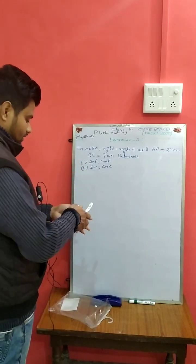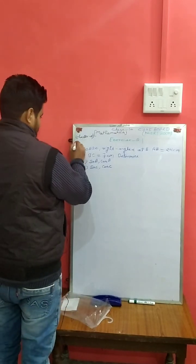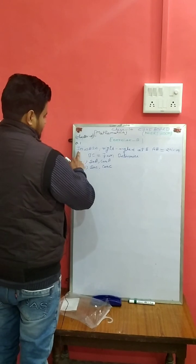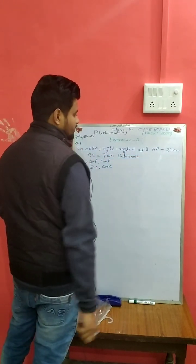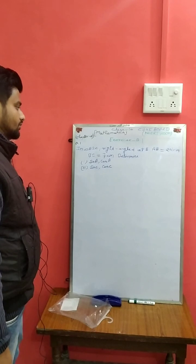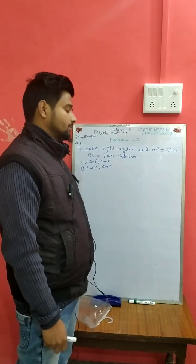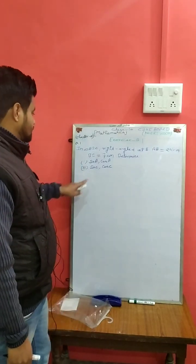Exercise 8.1: In triangle ABC, right angle at B, AB equals 24 cm, BC equals 7 cm. Determine sin A, cos A, sin C, and cos C.